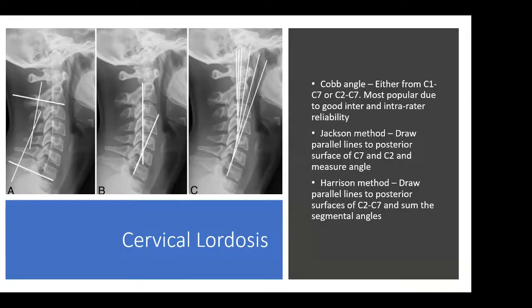For basic measurements of cervical lordosis, the most common is the C2-C7 Cobb angle. It's the most popular and has good inter- and intra-rater reliability, and it's the one that I've seen used most often.